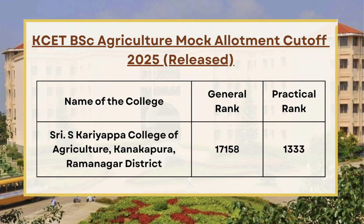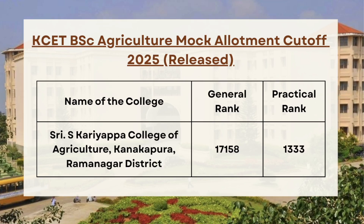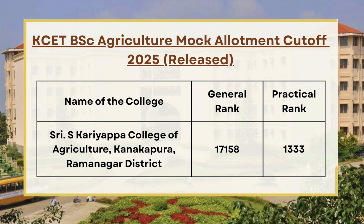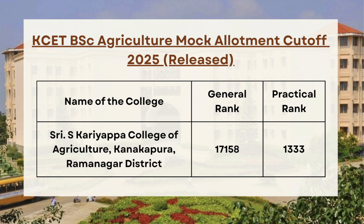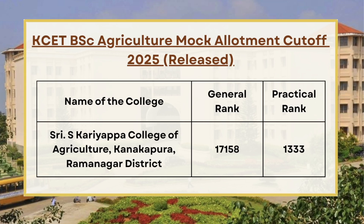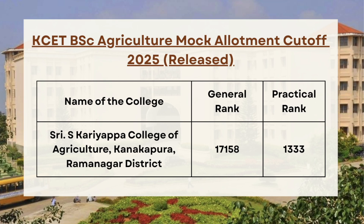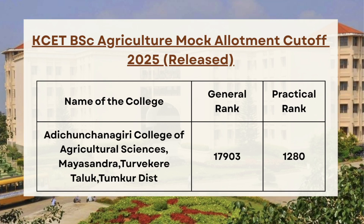Next in the list we have SSK College of Agriculture Ram Nagar. As you can see on screen, for general category the cutoff is 17158 and for practical the cutoff is 1333. Next we have Adi Chunchungiri College of Agriculture, so for general category the cutoff is 17903 and for practical the cutoff is 1280.